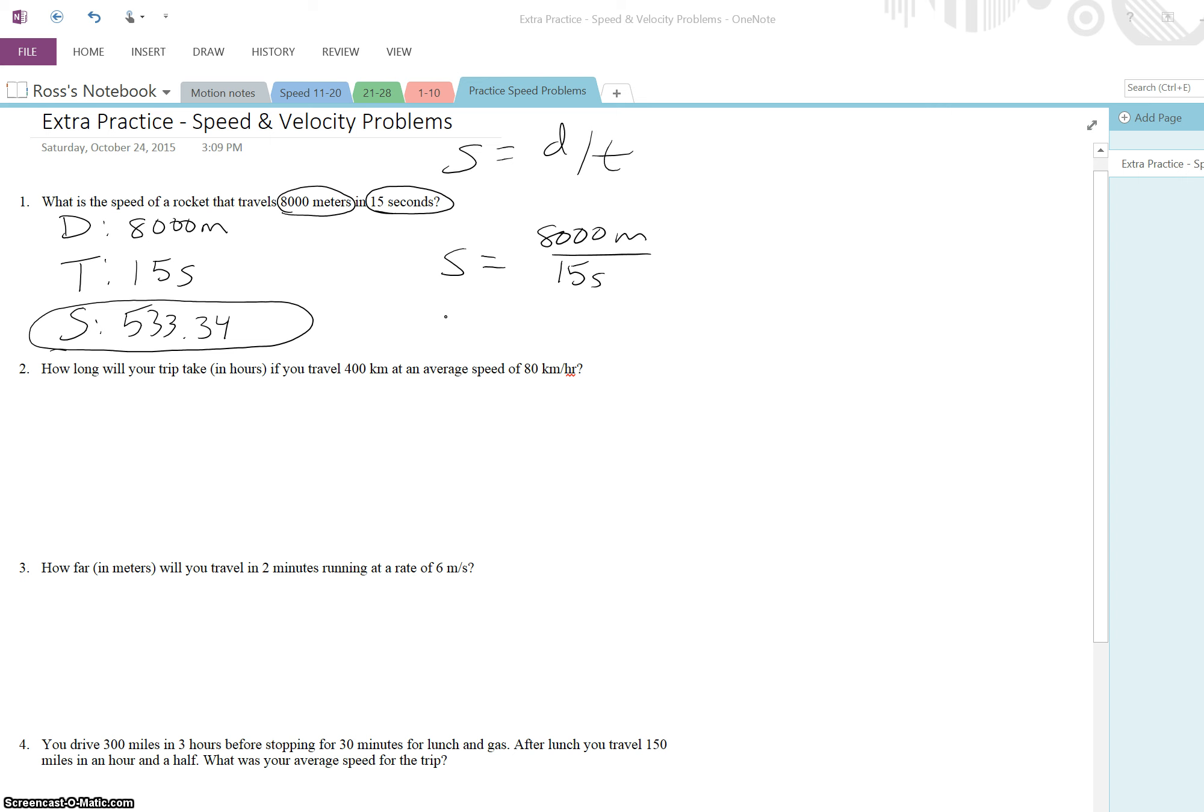This right here counts as having shown your math. You'll be able to use a calculator and with that calculator I don't need to see the long division or anything. So for number two, how long will your trip take in hours if you travel 400 kilometers at an average speed of 80 kilometers an hour. So let's first set this up. D, T, and S. 400 kilometers is my distance. I have a speed of 80 kilometers and time is therefore what we are solving for.